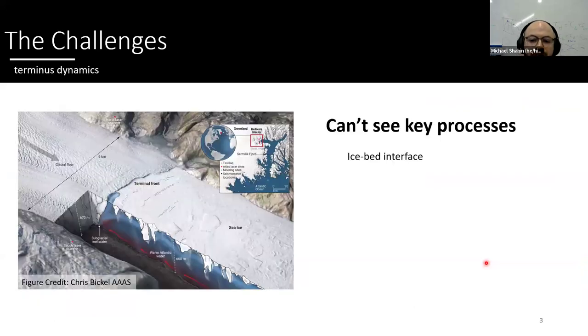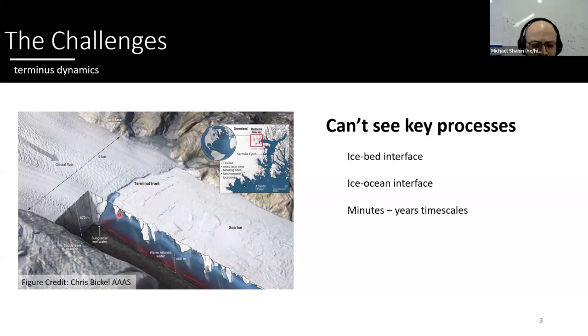And the reason why a lot of the glaciology community is still arguing about these two hypotheses is simply because we can't see the key processes. For example, here on the schematic on the left, we can't see the ice bed interface because it's just under water, and sometimes under what's called the ice melange, which is a granular material with iceberg clasps and sea ice-like matrix. And you also can't see the ice-ocean interface, where the ice in the ocean meet.